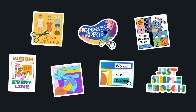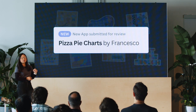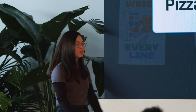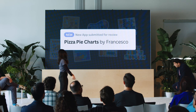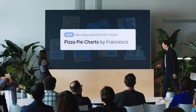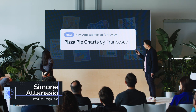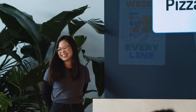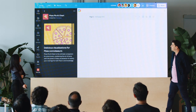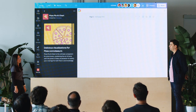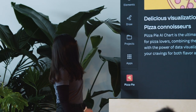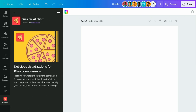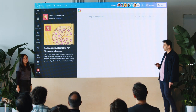So there you have it — our seven key design principles that you can now apply when designing your next app. It looks like a new app has just been submitted for review. Simone, can you help? It looks like it could be some data, food, AI-related app — 'Pizza Pie AI Chart.' I'm not sure what it is, but I do like the icon. Should we have a look at the app? Let's take a look.